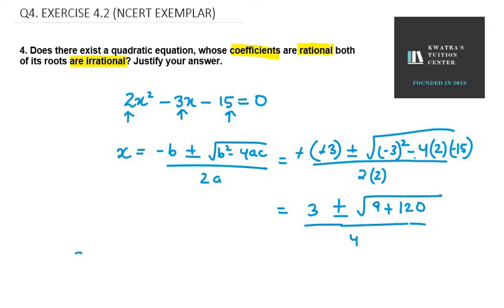We get 2 values out of this. That is (3 + √129)/4 and (3 - √129)/4. If you add some irrational number, it will remain irrational.